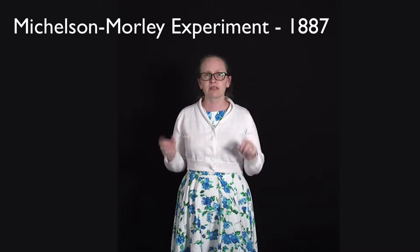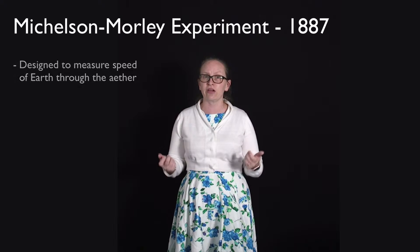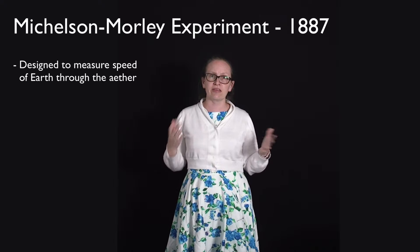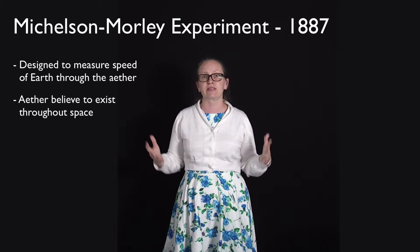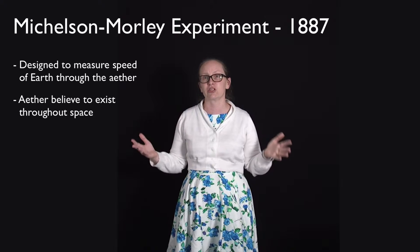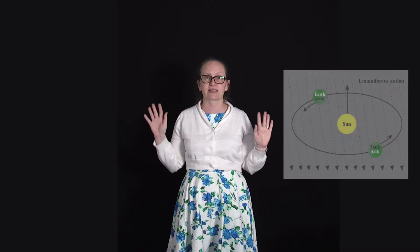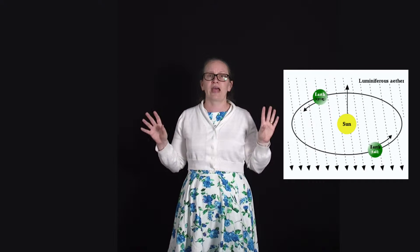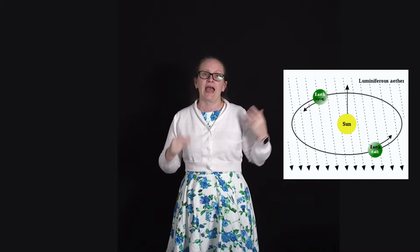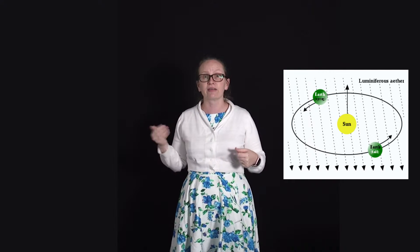We're now going to look at the Michelson-Morley experiment. It was performed by Michelson and Morley back in 1887 and was designed to measure the speed of the earth as it moved through the ether. At the time it was thought that the ether was found throughout space — a preferred reference frame against which the movement of everything could be measured. As the earth orbited the Sun, it would have a different speed through the ether at different times of year, and this experiment was set up to measure this speed.